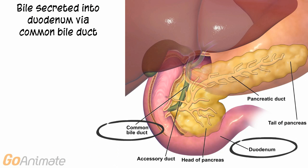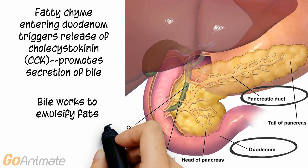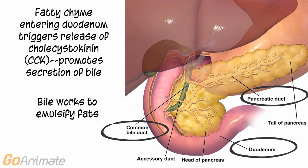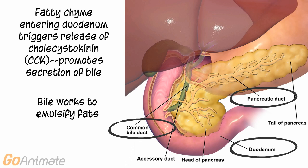Bile is secreted into the duodenum via the common bile duct. The common bile duct ends in a small sphincter called the hepatopancreatic sphincter. Bile is made by the liver and stored in the gallbladder. Fatty chyme entering the duodenum triggers the release of cholecystokinin, or CCK, which promotes the secretion of bile. Bile works to emulsify fats.